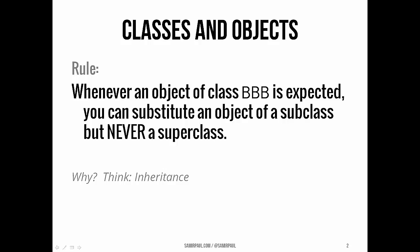The big rule that the compiler enforces in this situation is essentially that in any circumstance where an object of some class BBB is expected, then it's always, always, always acceptable to substitute an object of a subclass, but never of a superclass.